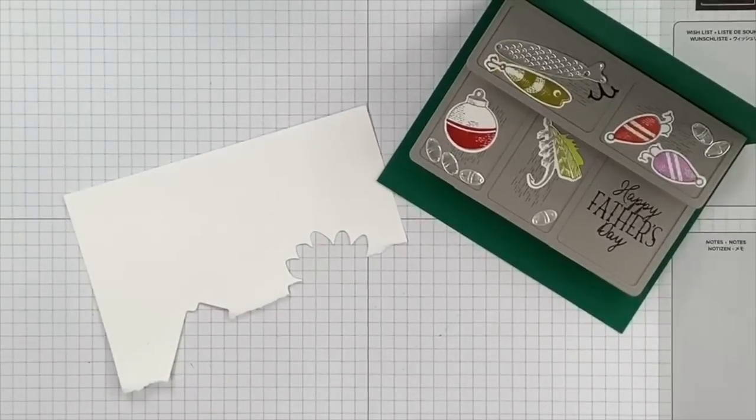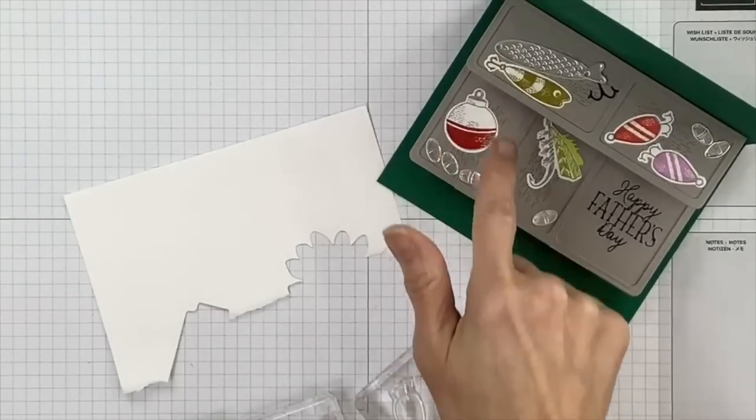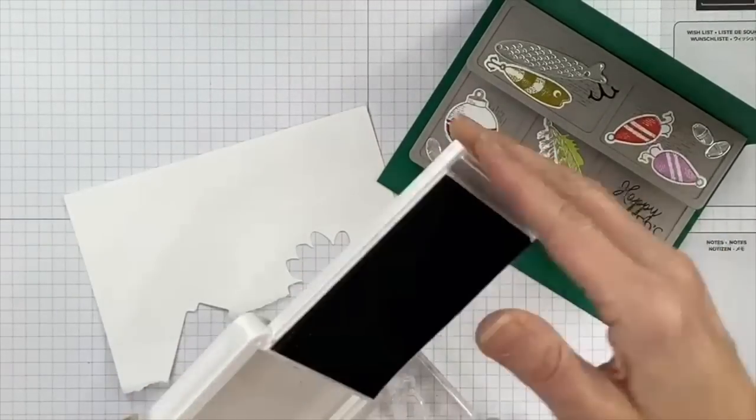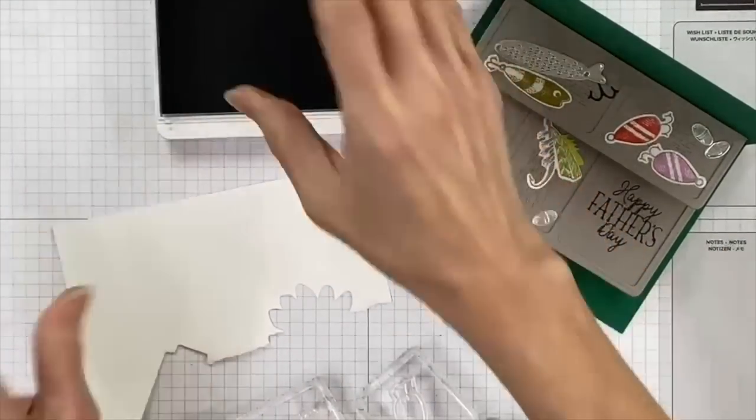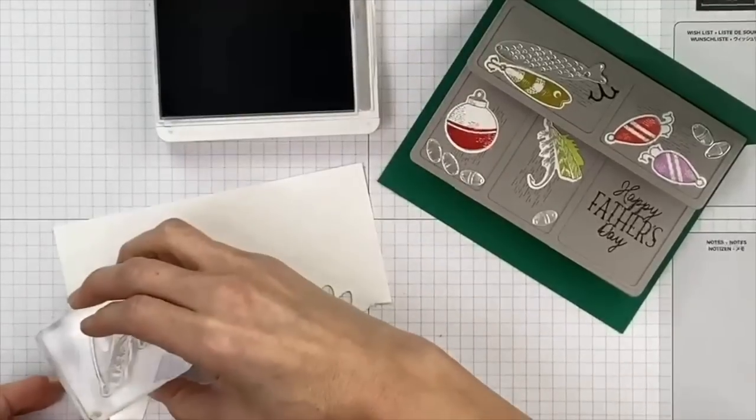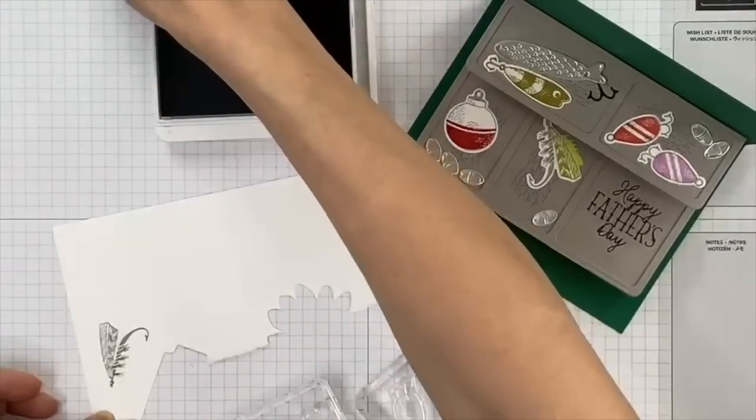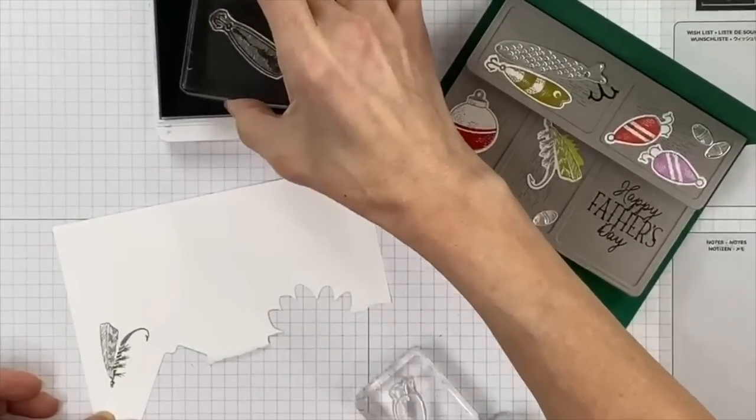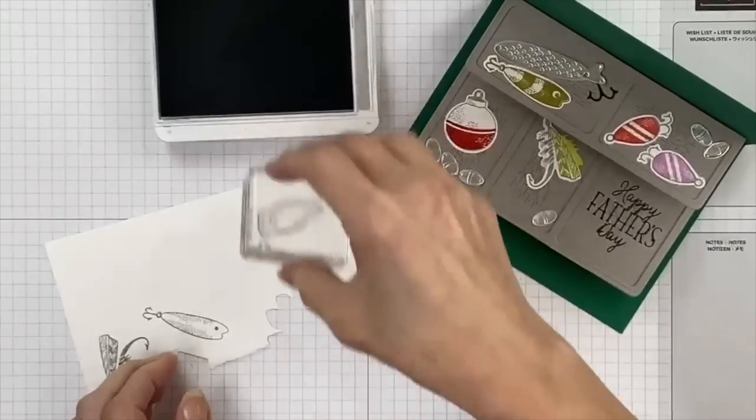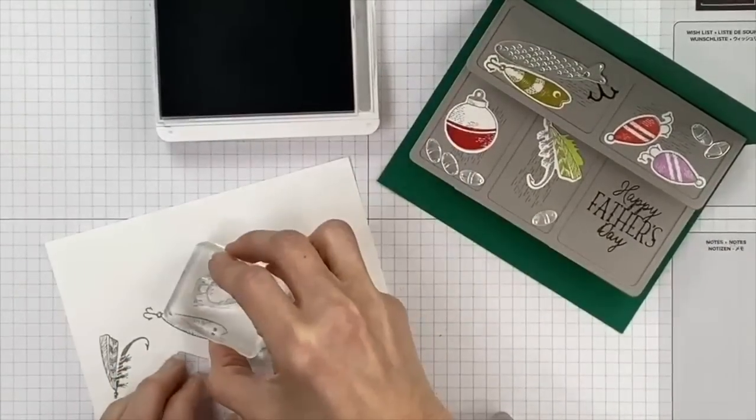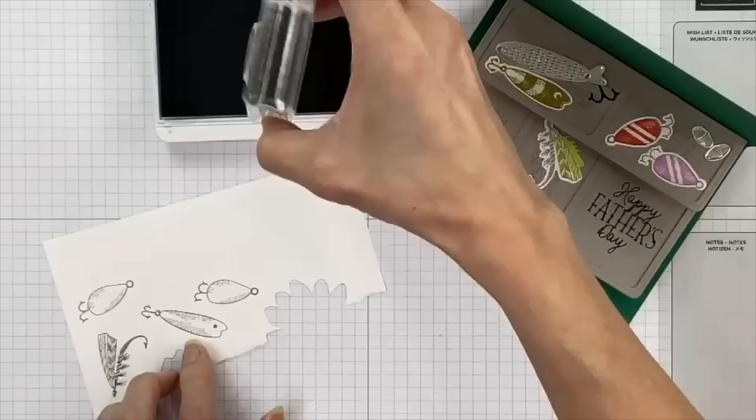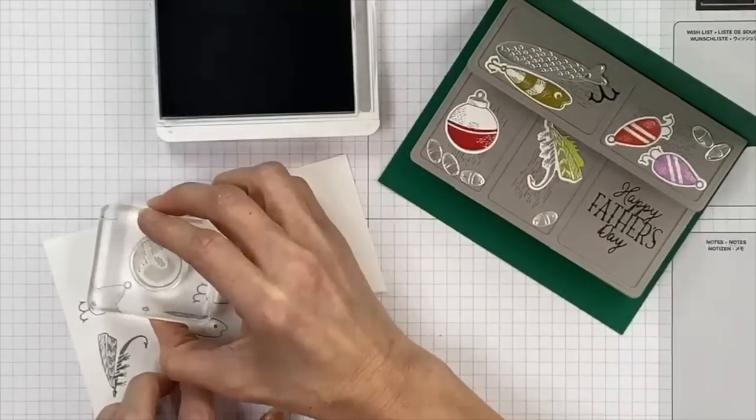We need to do some more die cutting, but before we do that we're going to need to stamp first. So let's grab our Smoky Slate ink, which is a nice light gray, a cool gray that looks similar to silver. And we're going to stamp our fly and our fun little fishy looking lure. And then we'll stamp our spoon a couple times, so we'll do two of those. And you want to have these spaced out far enough so that you can die cut them, and then we'll do a bobber.